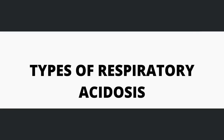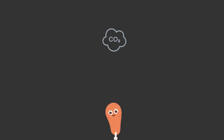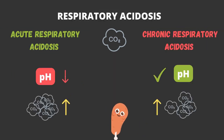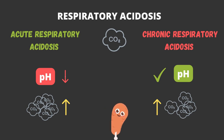Here we come to our next topic: types of respiratory acidosis. Since it's hypercapnic respiratory failure, it's of two types: acute respiratory acidosis and chronic respiratory acidosis. Acute respiratory acidosis is when the pH of blood drops below normal and the level of CO2 is raised. Whereas in chronic respiratory acidosis, the pH is within normal limits but there is significant CO2 retention. This condition is caused by the compensatory mechanism of the body, so there is an increased level of bicarbonate to compensate for the acid-base balance of the blood. Chronic respiratory acidosis is seen in COPD, ILD, etc.